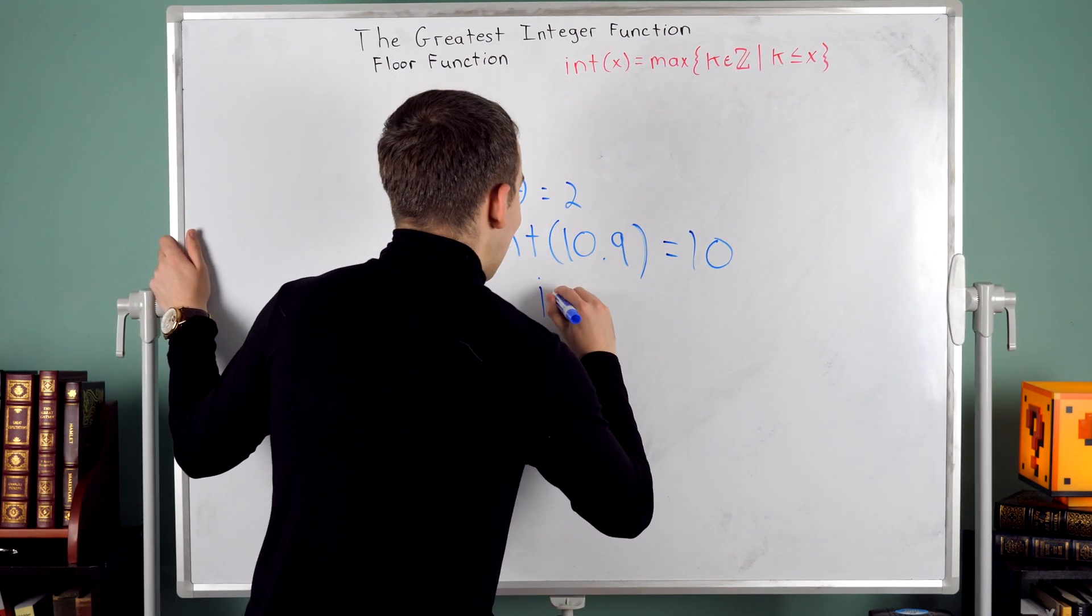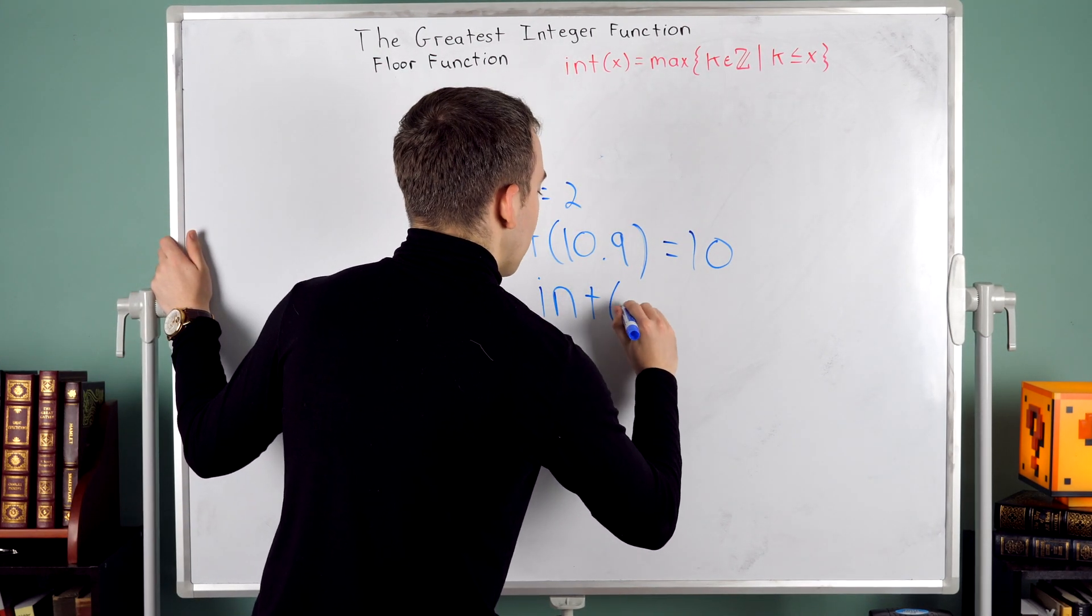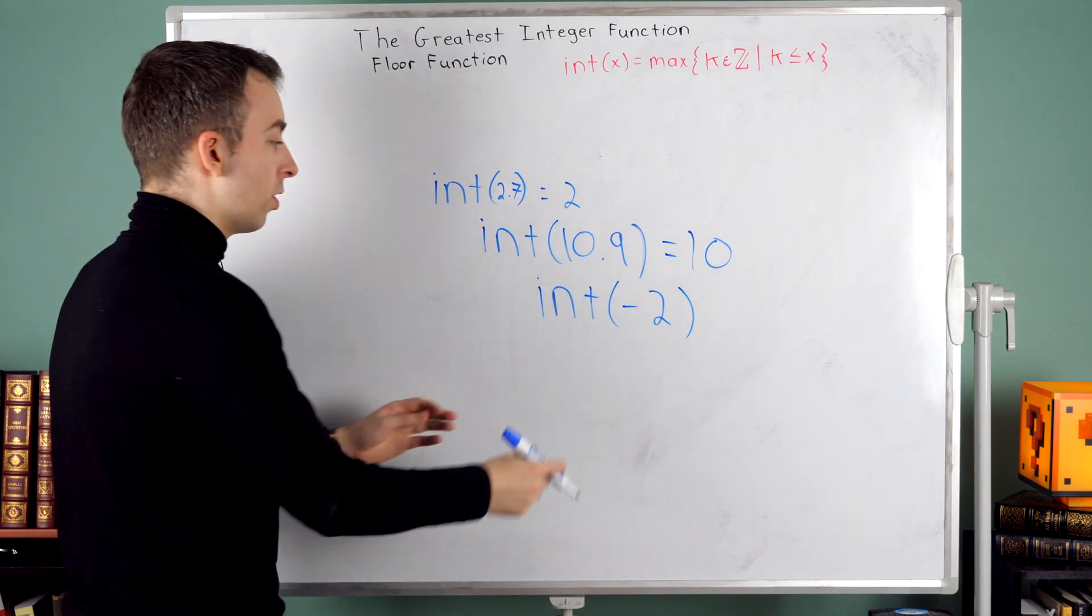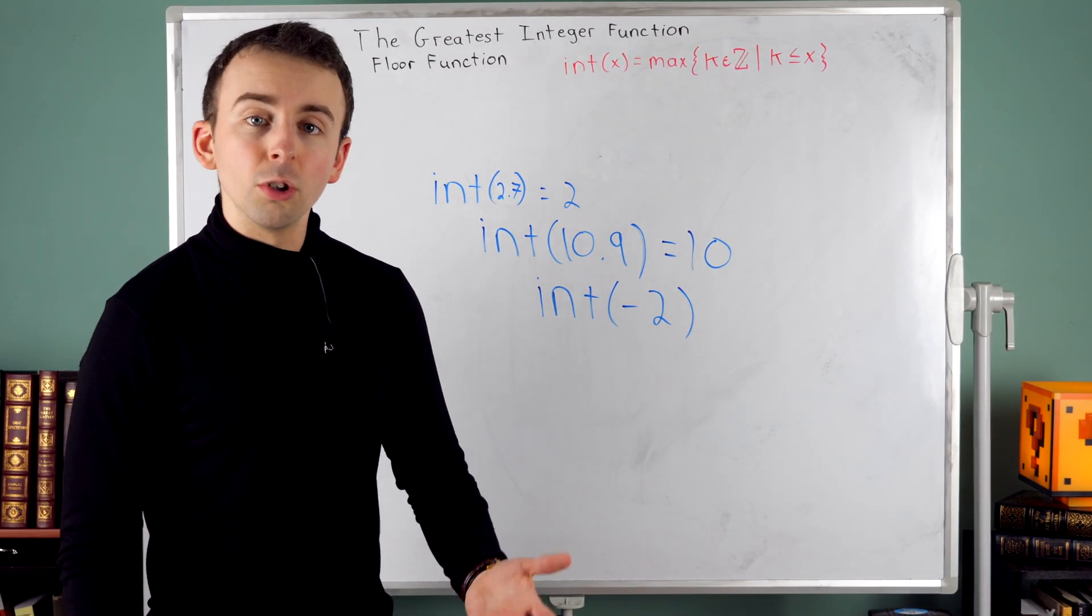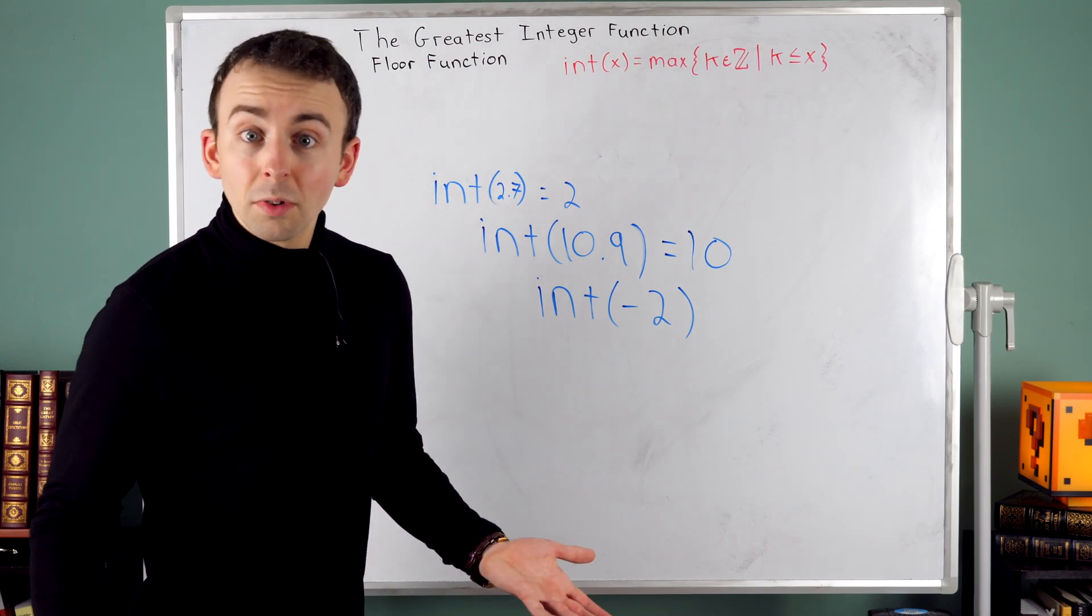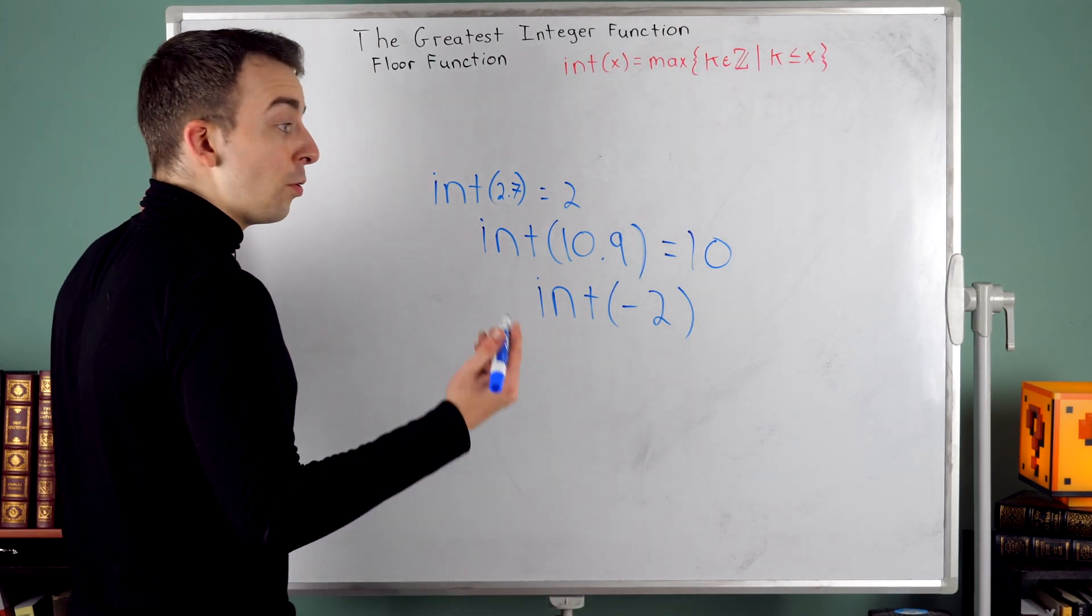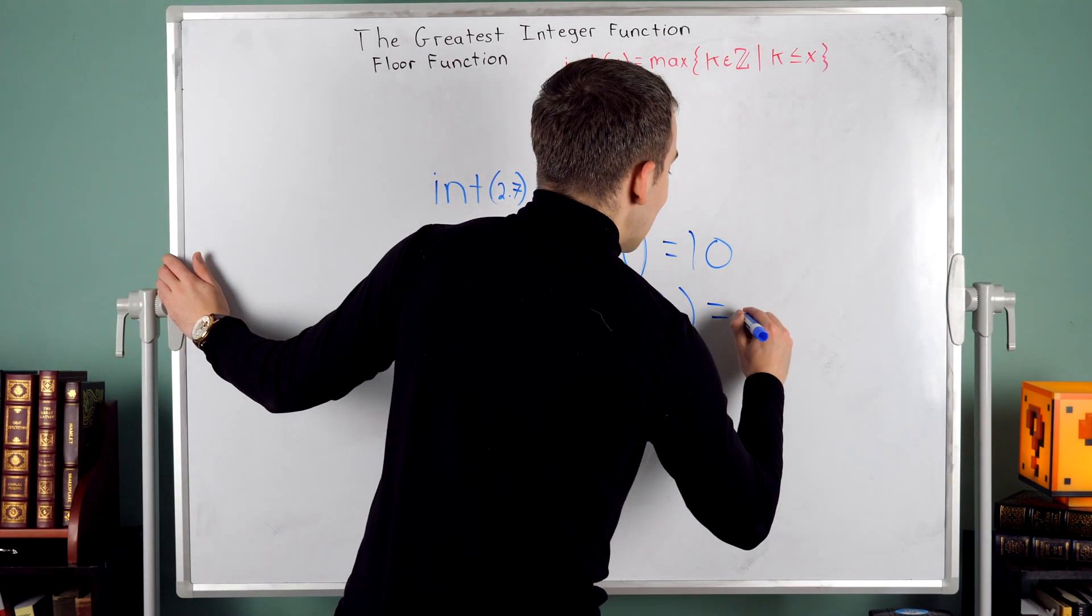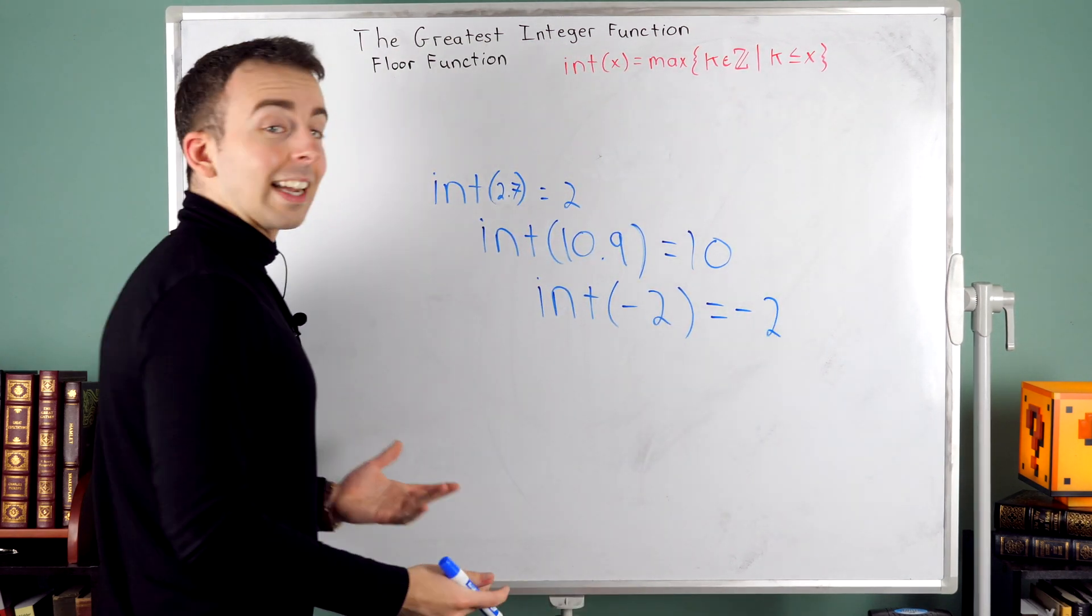What if you put in an integer? What about the greatest integer function evaluated at negative two rounding down to the nearest integer? Well, negative two is already an integer. So negative two is the nearest integer that's less than or equal to negative two.